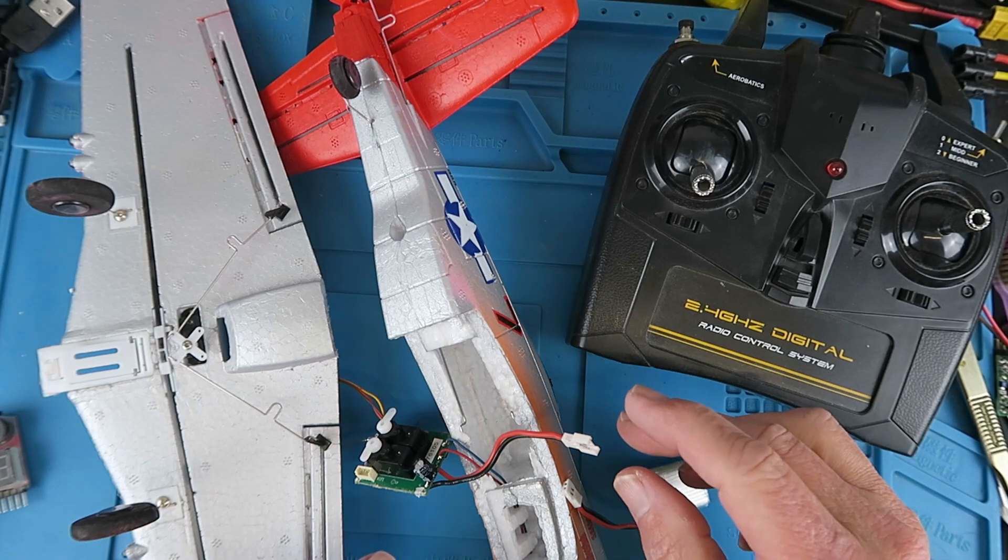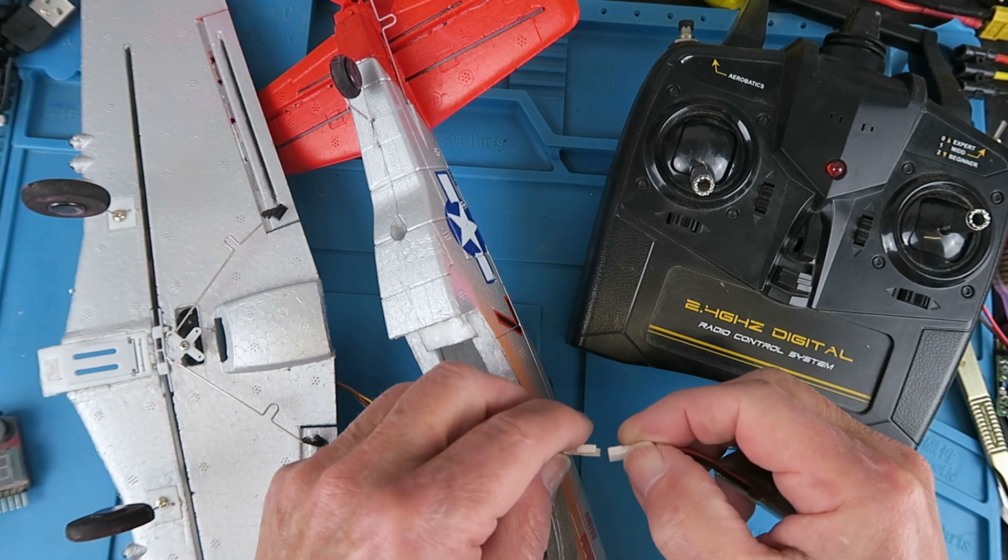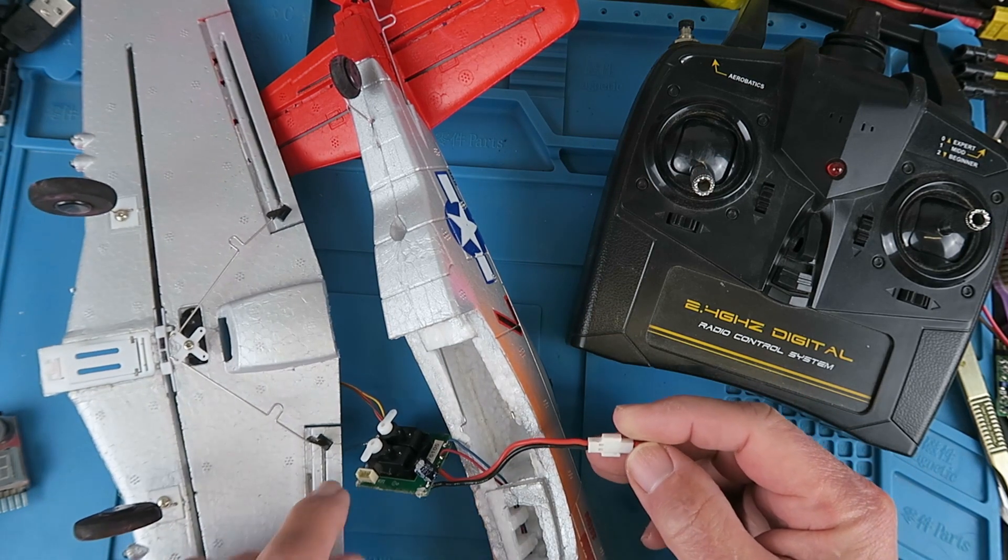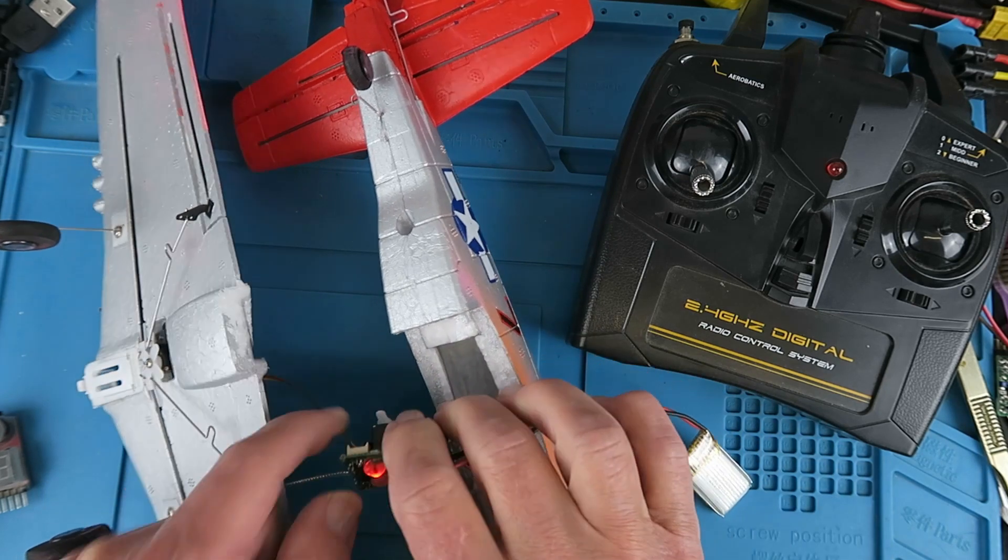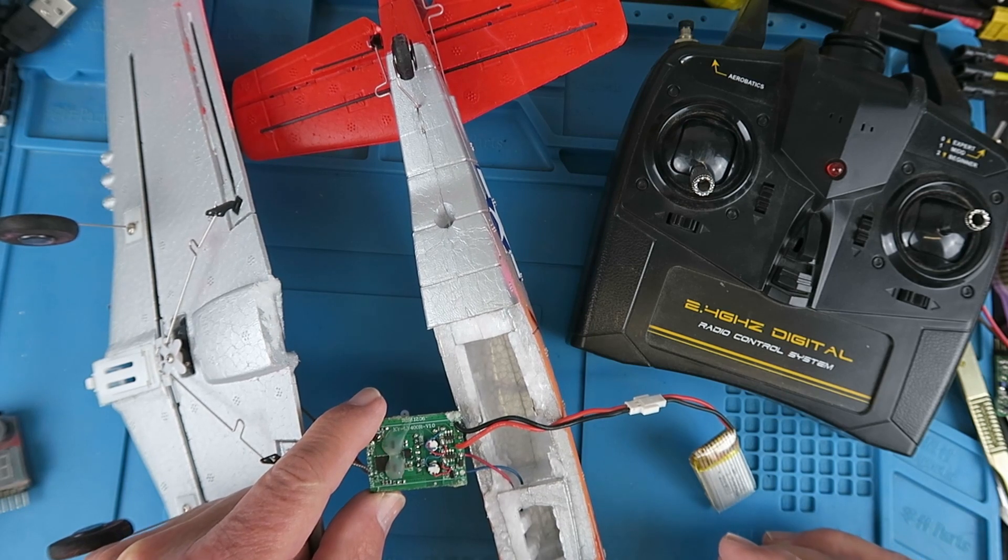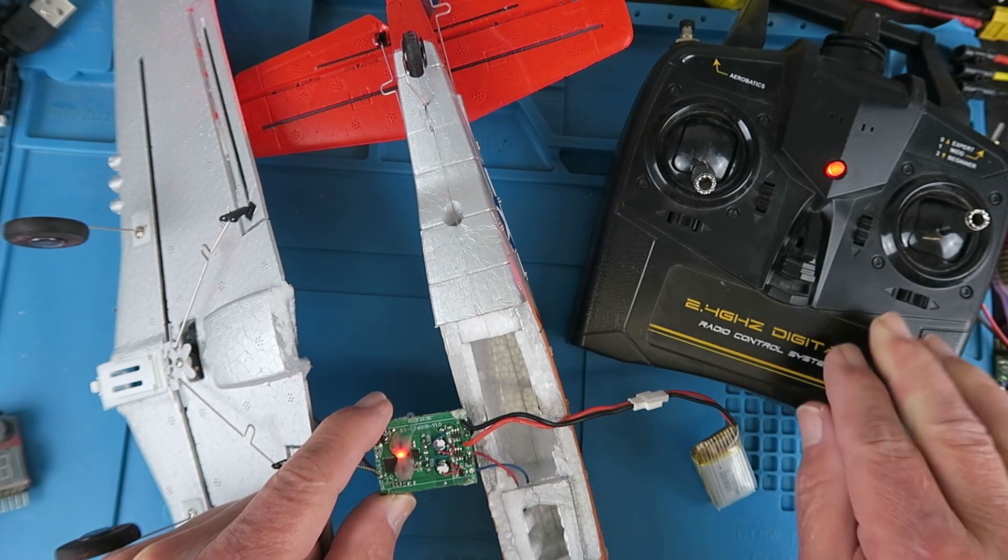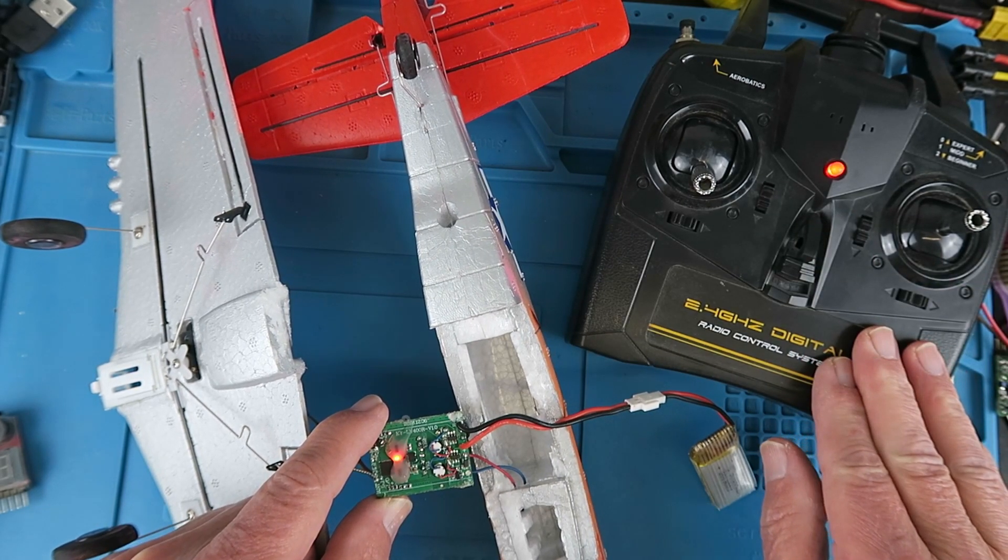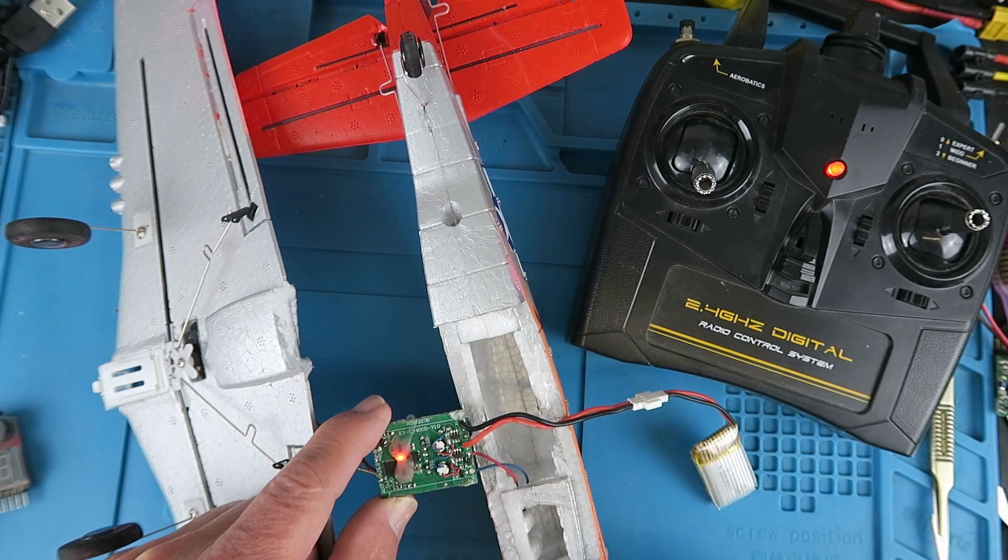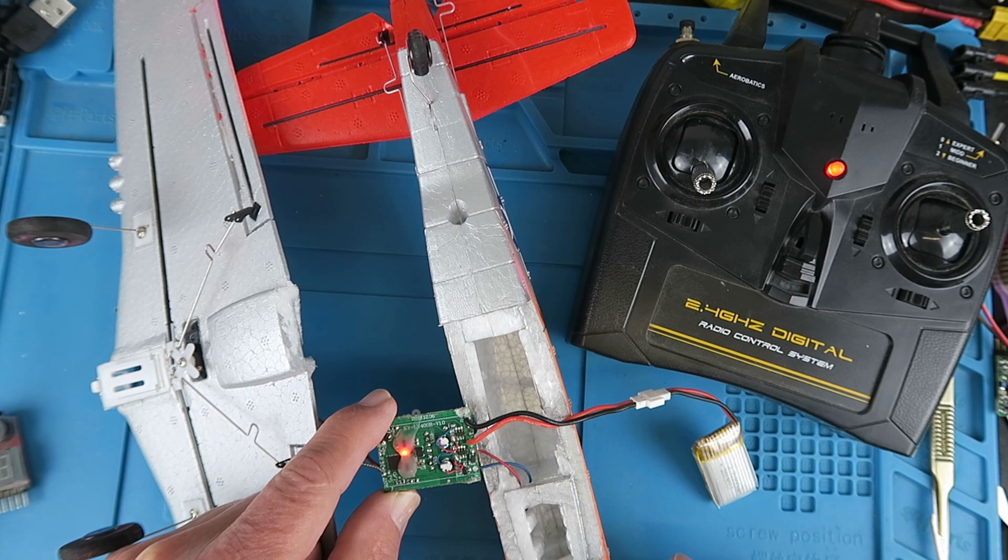Carefully noting the polarity then, let us connect the battery up, or a cell rather. Saw the ailerons move there, that's encouraging. And the flashing light to indicate that it's in its bind mode. Let's switch on the transmitter now then. And the light has gone solid, indicating that it's bound. So far so good. I've actually been through this before, and something quite bizarre has happened.